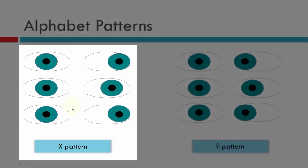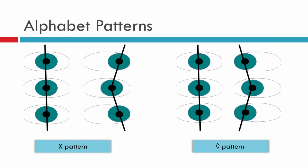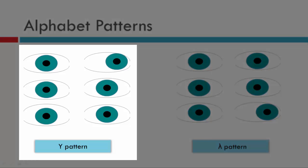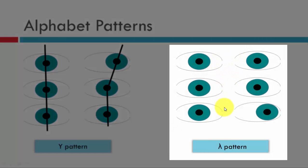Looking at schematic diagrams: for the X pattern in primary position there is little deviation, but there is relative divergence in up gaze and relative divergence in down gaze, producing an X pattern. For the diamond pattern, eyes look relatively aligned in primary, with relative convergence in both up and down gaze, producing a diamond pattern. For the Y pattern, eyes are relatively aligned with little change in down gaze, but relative divergence in up gaze, producing a Y pattern. The lambda is the opposite: no change between primary and up gaze, with relative divergence in down gaze, producing a lambda pattern.